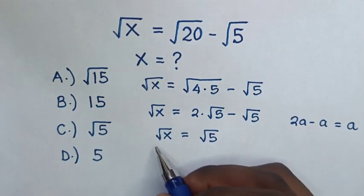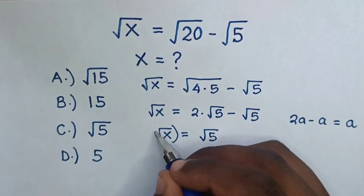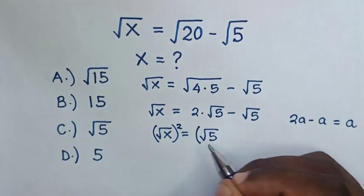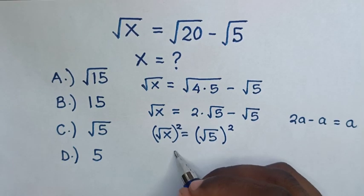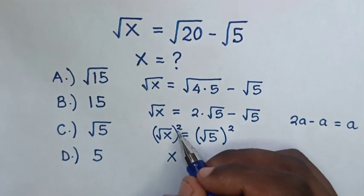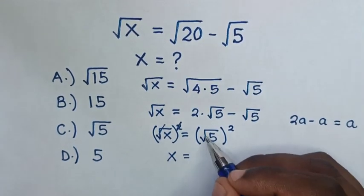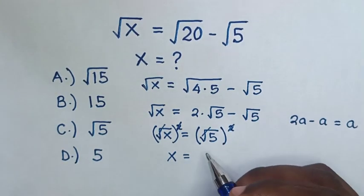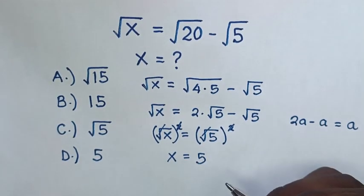To find the value of x, we'll square both sides. So x equals... this square will cancel with square root. Then x equals 5.